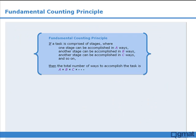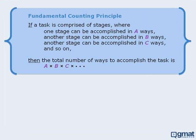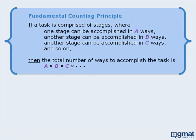Here's how the fundamental counting principle works. If we have some task that is made up of stages, where one stage can be accomplished in A ways, another stage in B ways, another stage in C ways, and so on, then the total number of ways to accomplish the entire task will be equal to the product A times B times C, and so on.